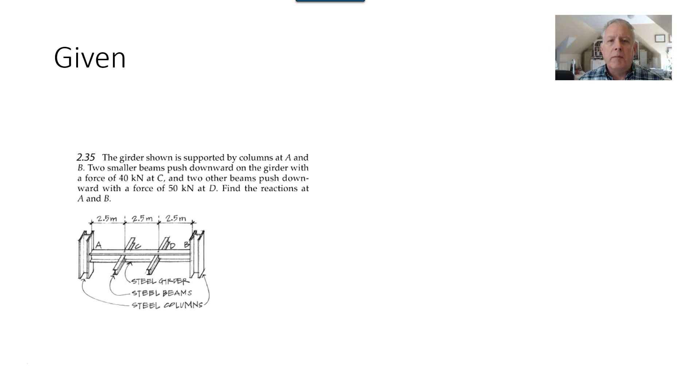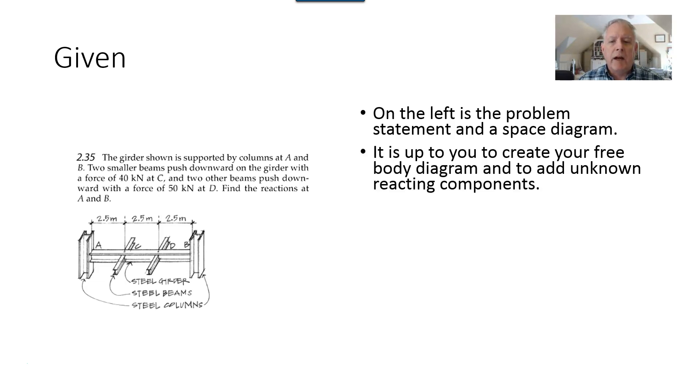So here is the problem statement and the space diagram as shown on the left. It's a girder supported by columns at A and B. The two beams pushed downward on the girder with a force of 40 kilonewtons at C and the other two beams pushed down with 50 kilonewtons at point D. You're supposed to find the reactions.